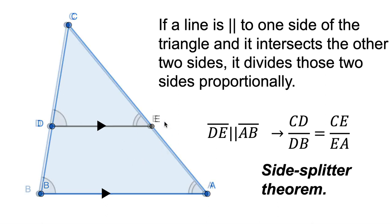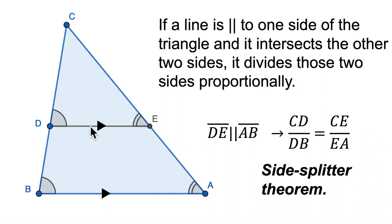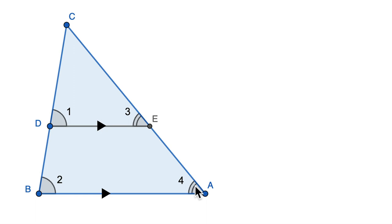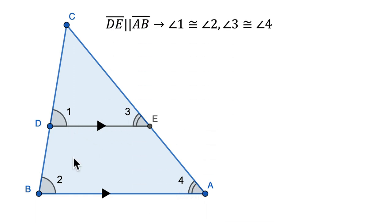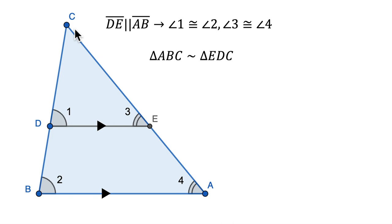Part of the joy of this is to understand why. If we think about what's happening with these angles, we have two parallel lines. That means the sides of the triangle are transversals — lines across parallel lines. That means this angle is corresponding to this angle and congruent to it, and likewise this angle is corresponding and congruent to the other. That gives us two similar triangles: triangle ABC is similar to triangle EDC by the angle-angle theorem.